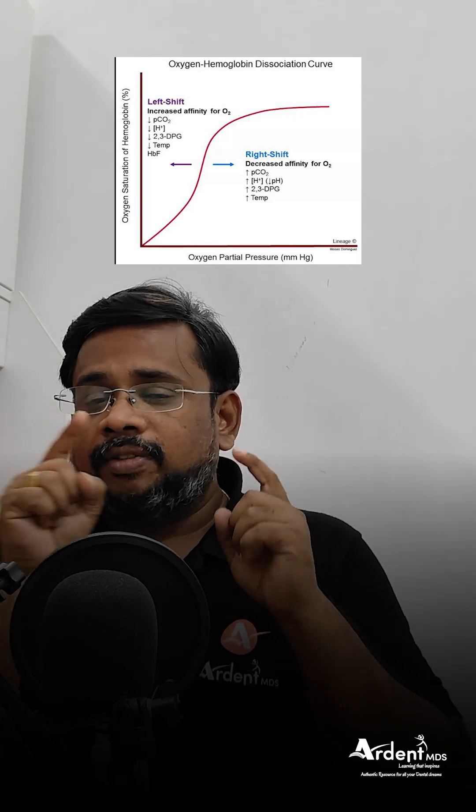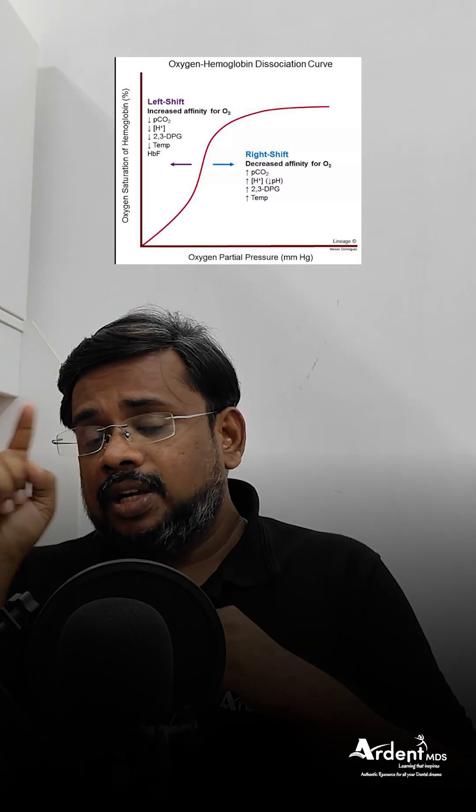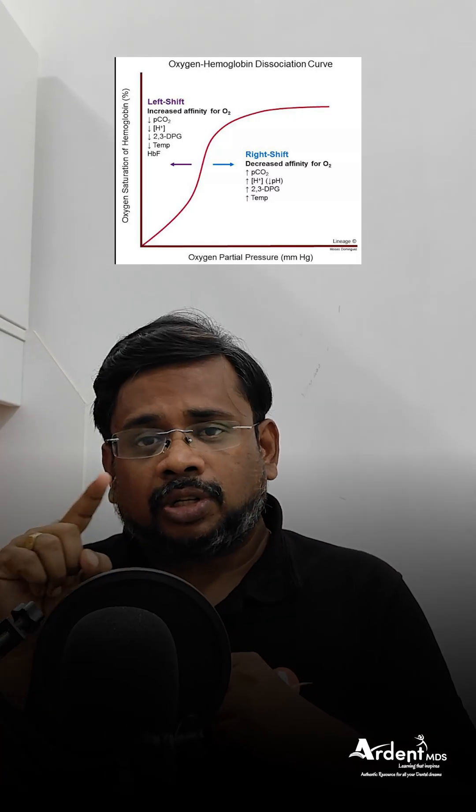Just the opposite for the left shift. The left shift means oxygen stays in the blood. Oxygen dissociation curve shifts to the left — that means alkalosis, hypothermia. And there is one more very important thing: fetal hemoglobin. In fetal hemoglobin, hemoglobin binds with oxygen very strongly, so oxygen dissociation curve shifts to the left side.